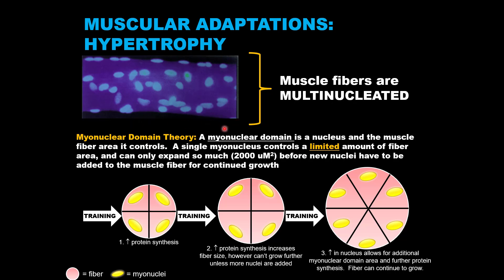This is a little different than the last images I've shown you of muscle fiber samples. This is not a cross-sectional view, but a longitudinal view. You're looking at the muscle fiber sideways, or long ways rather. And these glowing little ovals right here are stained myonuclei.